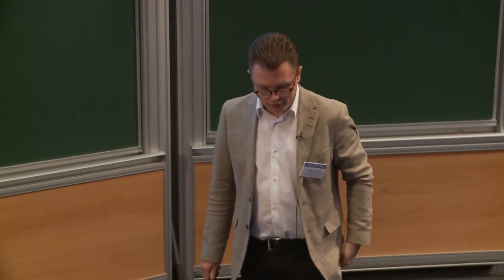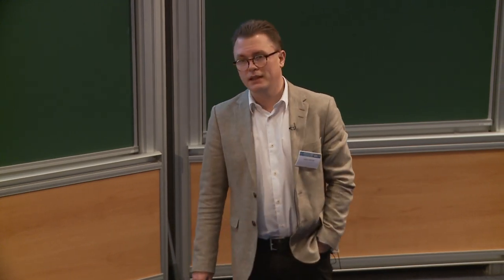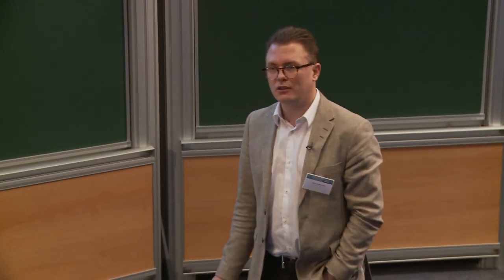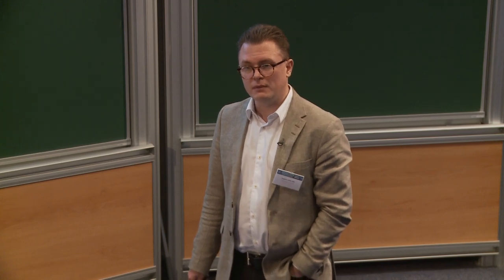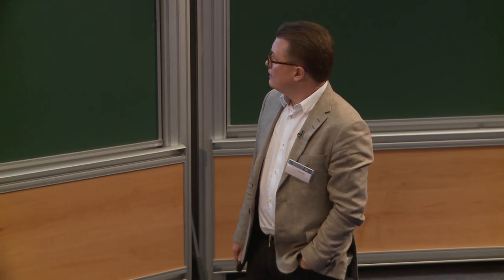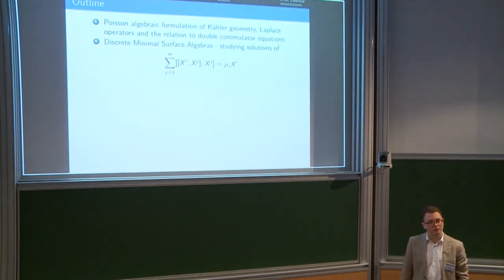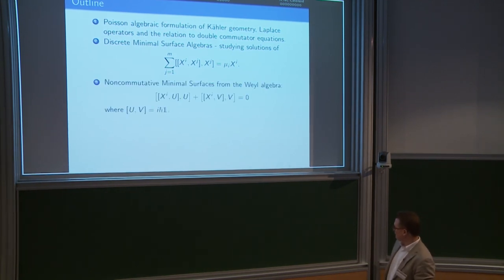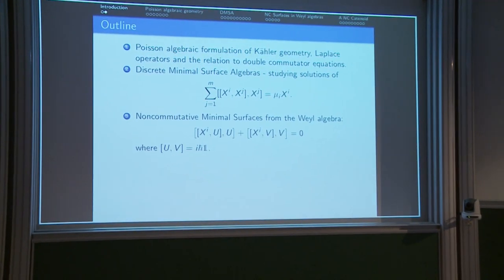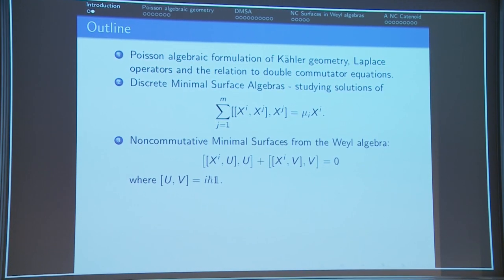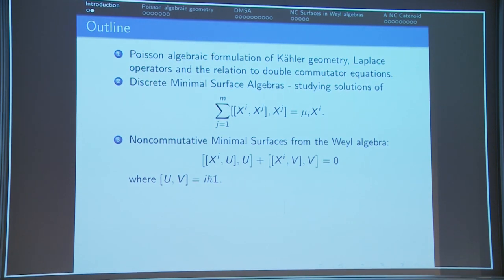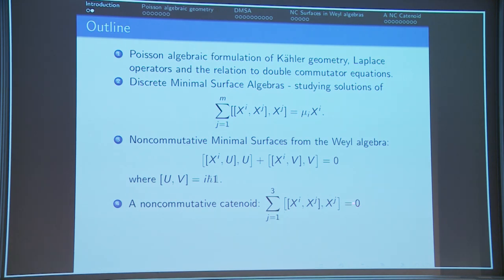Let me outline what I will do. First, I will tell you how you can formulate Kähler geometry in terms of Poisson brackets — a little like the previous talk — and how that leads to equations for minimal surfaces written as Poisson bracket expressions. Then I will go to the paper which I borrowed the title from, Discrete Minimal Surface Algebras, trying to solve these equations. I will also solve these equations in the Weyl algebra, where u and v are operators commuting to 1. Finally, I will say something about a non-commutative catenoid.